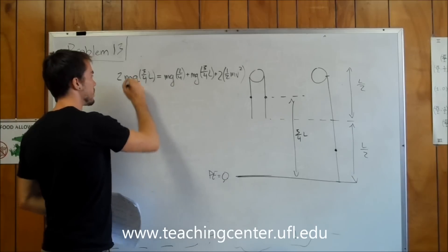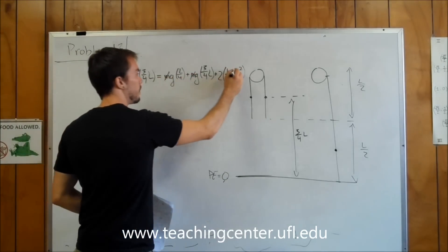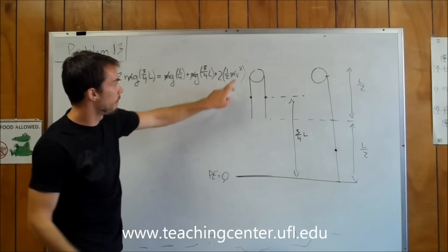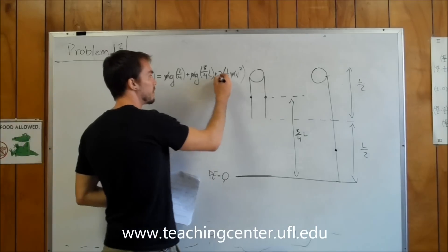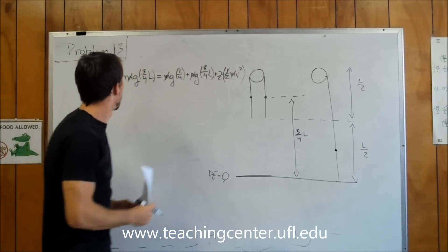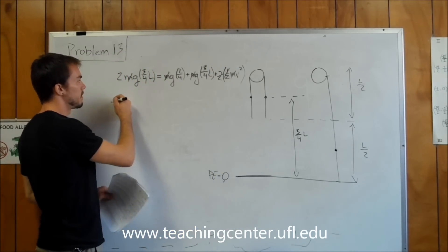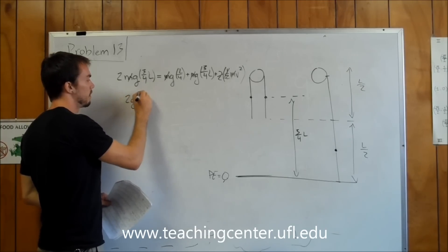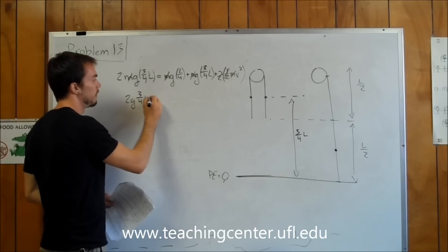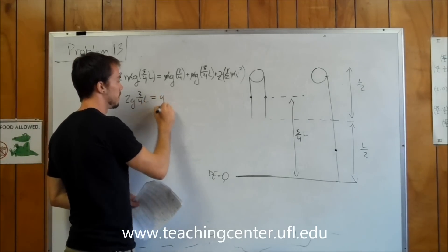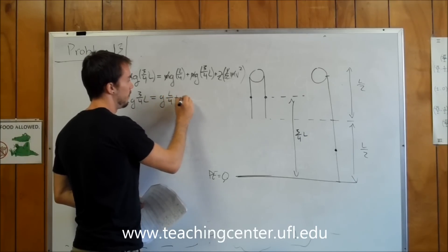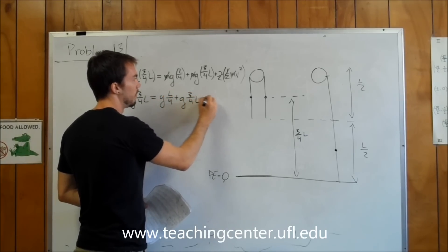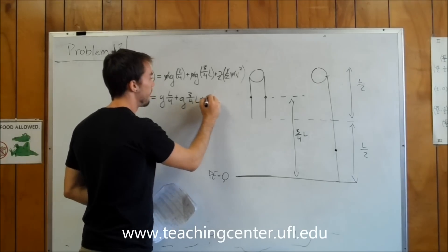And this is going to be our energy equation. So of course, as usual, masses end up cancelling, which is nice. Our lengths don't because we don't have one in this term. We can drop the two into one half. So we have 2 times g times 3/4 of L is going to be equal to g times L over 4 plus g times 3/4 of L plus v squared.